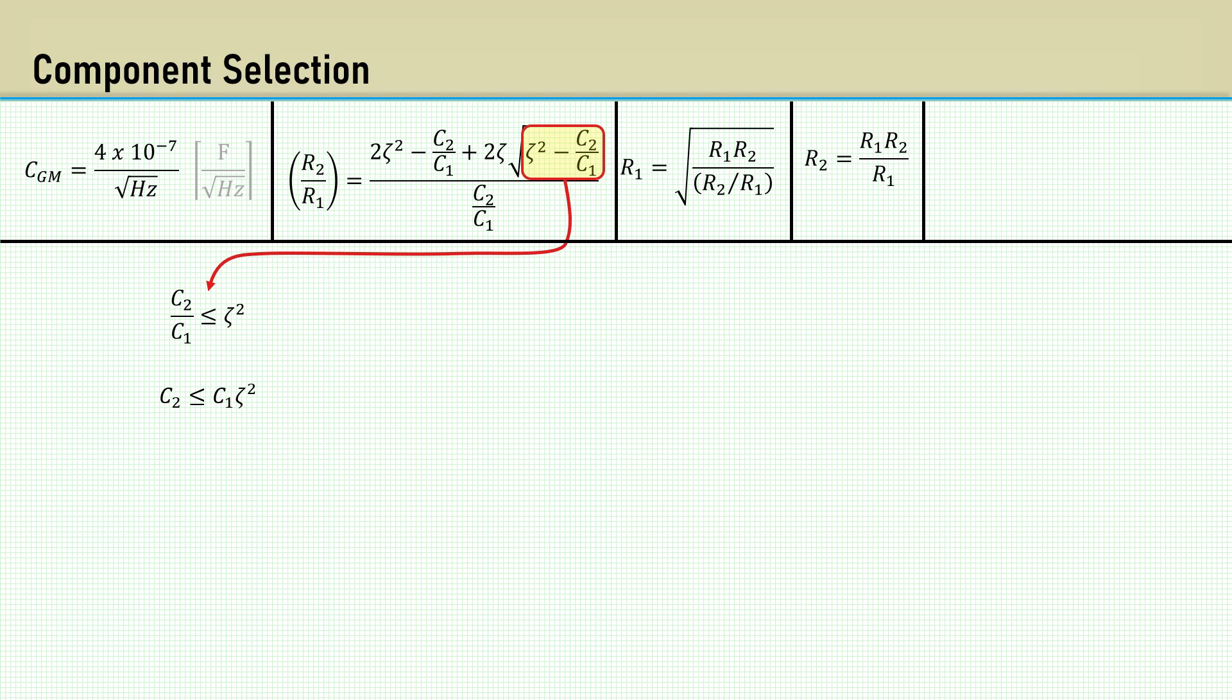The main takeaway from this is that when zeta is less than 1, C1 is going to be higher than the geometric mean capacitance. And if zeta is greater than 1, C2 is going to be higher than the geometric mean capacitance. To make C1 go in the right direction, we will multiply the geometric capacitance by the reciprocal of zeta.